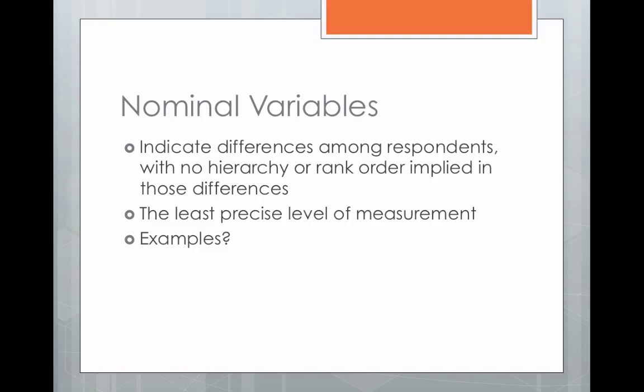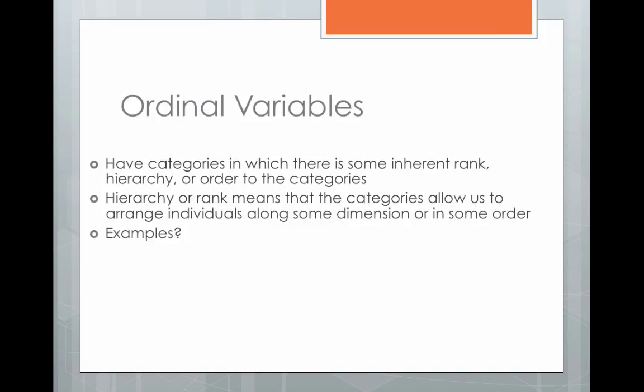You're looking at how people can respond to that survey question in order to determine the level of measurement. The second type of categorical variable is ordinal variables. Ordinal variables have categories in which there's some inherent rank, hierarchy, or order — which makes sense, ordinal variables have order to the categories. We can arrange individuals along some sort of dimension that naturally makes sense. One example is any of those strongly agree to strongly disagree questions, because they have a natural order.